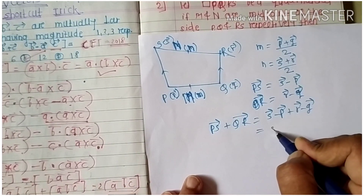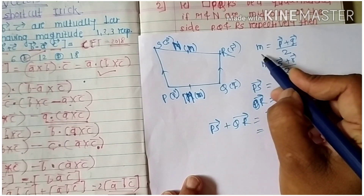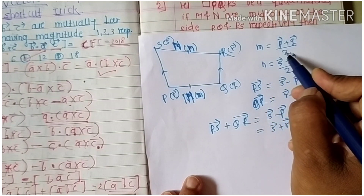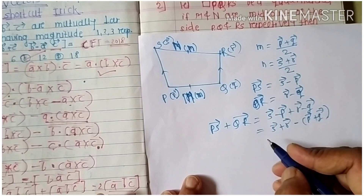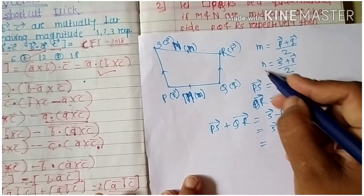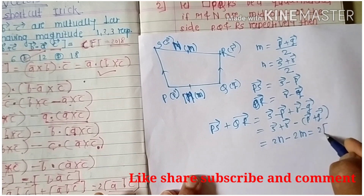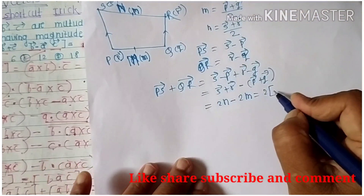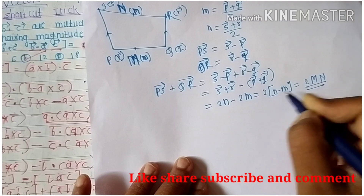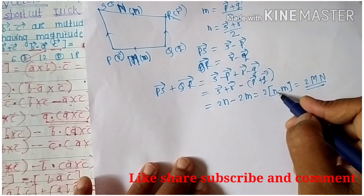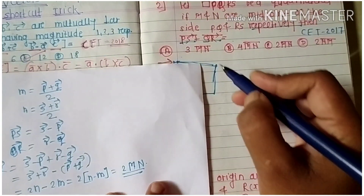Separating positive and negative terms: PS̄ + QR̄ = (s̄ + r̄) − (p̄ + q̄). From the midpoint formula, p̄ + q̄ = 2m̄ and s̄ + r̄ = 2n̄. Therefore PS̄ + QR̄ = 2n̄ − 2m̄ = 2(n̄ − m̄), which by the distance formula is 2·MN — that is, twice the distance between M and N.